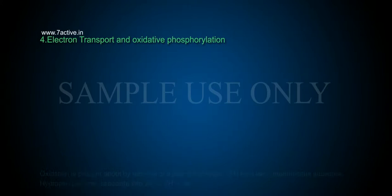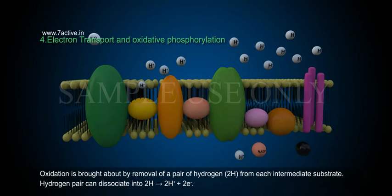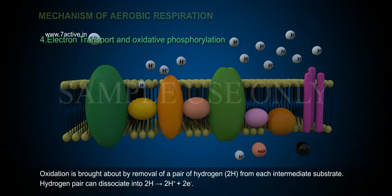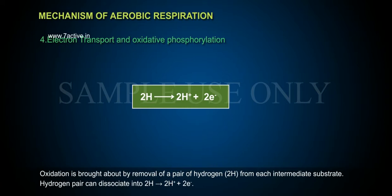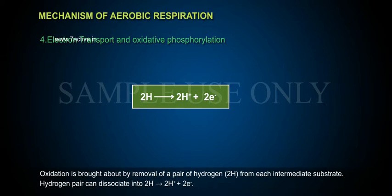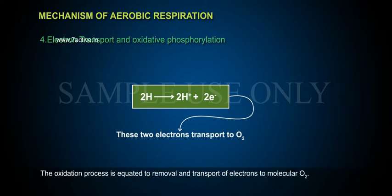Oxidation is brought about by removal of a pair of hydrogen (2H) from each intermediate substrate. The hydrogen pair can dissociate into 2H⁺ and 2e⁻. The oxidation process is equated to the removal and transport of electrons to molecular O2.